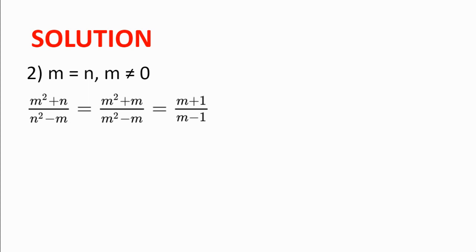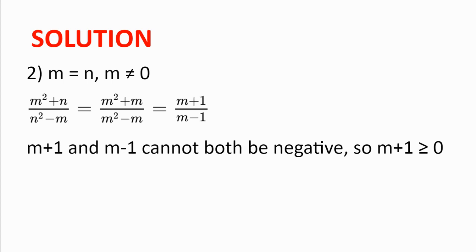We will now go on to the second case: m = n. We straight away see that m cannot be zero, as then the denominator will equal zero. So (m² + n) / (n² - m) becomes (m² + m) / (m² - m), which simplifies to (m + 1) / (m - 1). We see that m + 1 and m - 1 cannot both be negative, because then the absolute value of the denominator would be greater than the absolute value of the numerator, which cannot be true since the denominator is a factor of the numerator.